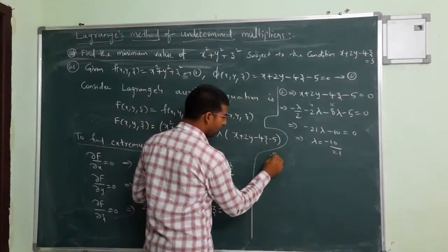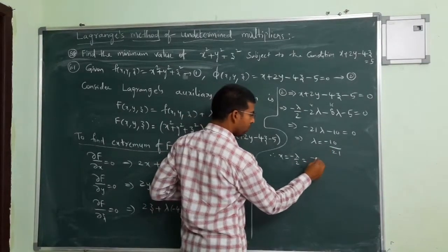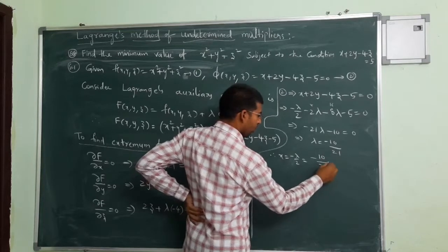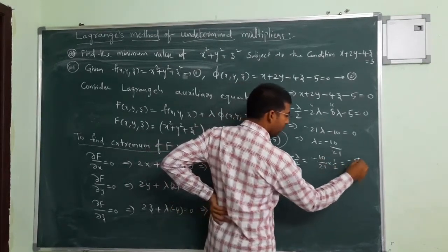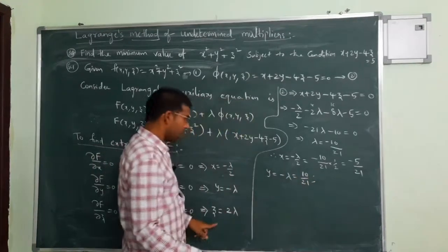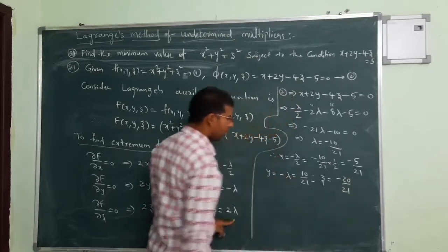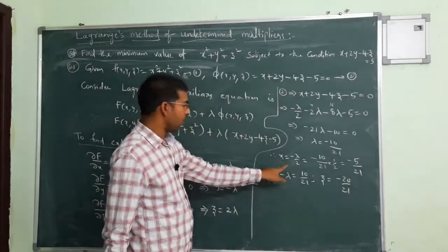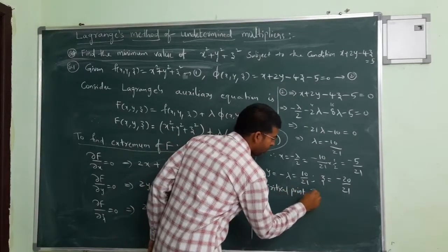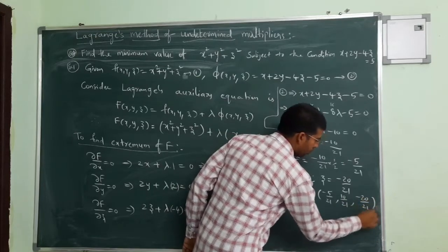So we got lambda. Therefore, x value is minus lambda by 2 equals minus 5 by 21. Similarly, y value is minus lambda equals 10 by 21. And z value is 2 lambda equals minus 20 by 21. Therefore, the critical point is minus 5 by 21, 10 by 21, minus 20 by 21. Only one critical point.